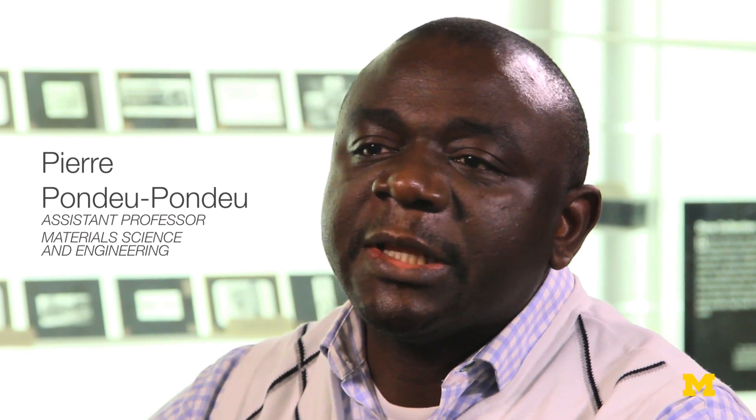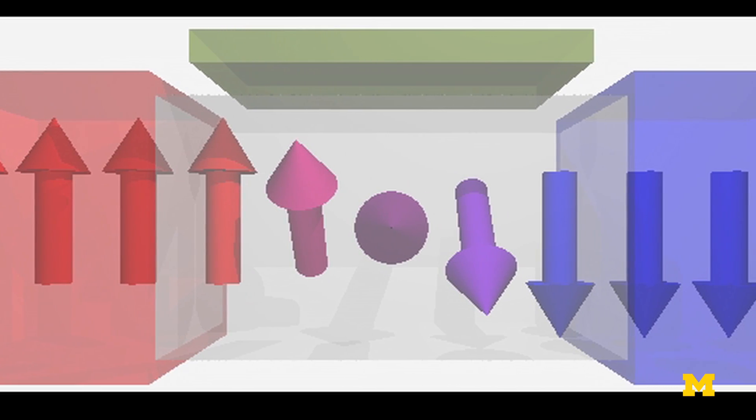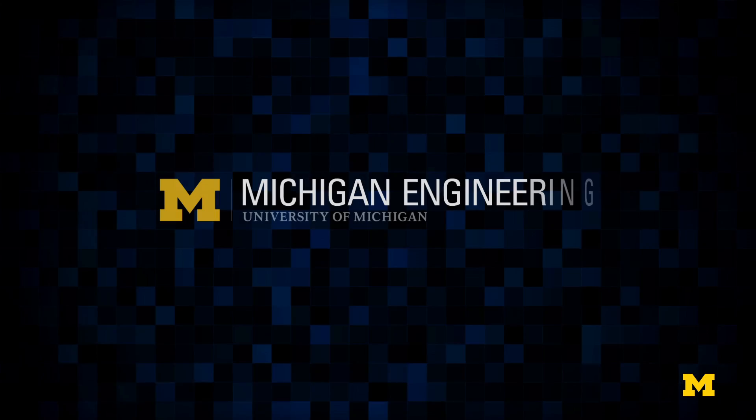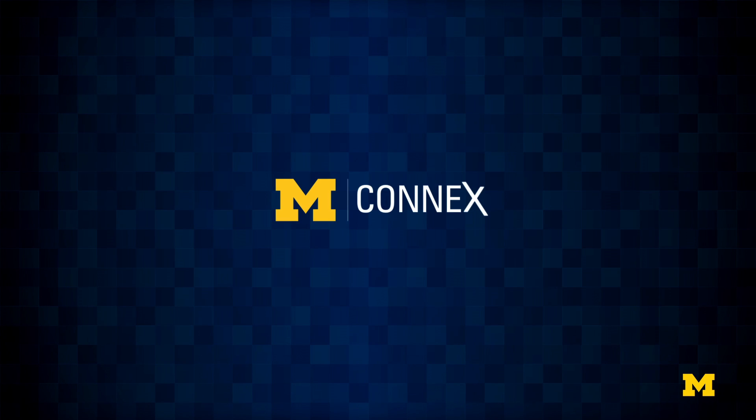The advantage of a spintronic conductor versus a regular semiconductor is that you can maintain the orientation of the electron spin. In a normal semiconductor, you cannot maintain the orientation of the spin, which means that any information encoded on the spin orientation will be lost during the electron transport.